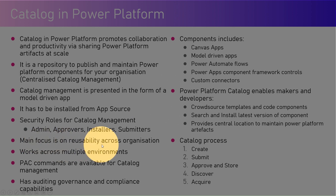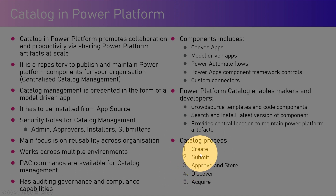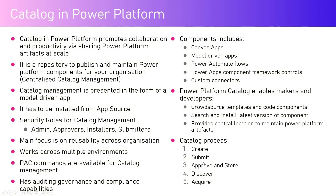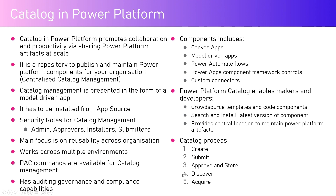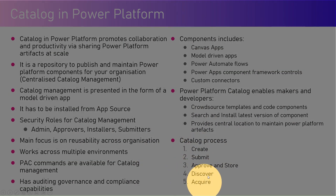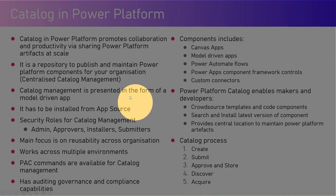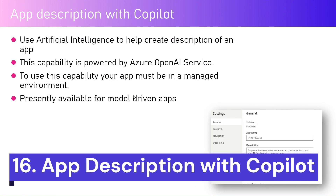The main focus of the catalog is reusability across the organization, and pac commands are available for catalog management. The process is: create a reusable artifact or component, submit it for approval, store it in the centralized repository once approved, and then end users can discover, acquire, and reuse it in other projects. This eliminates reinventing the wheel — if someone has already built a component, others across departments can use it.